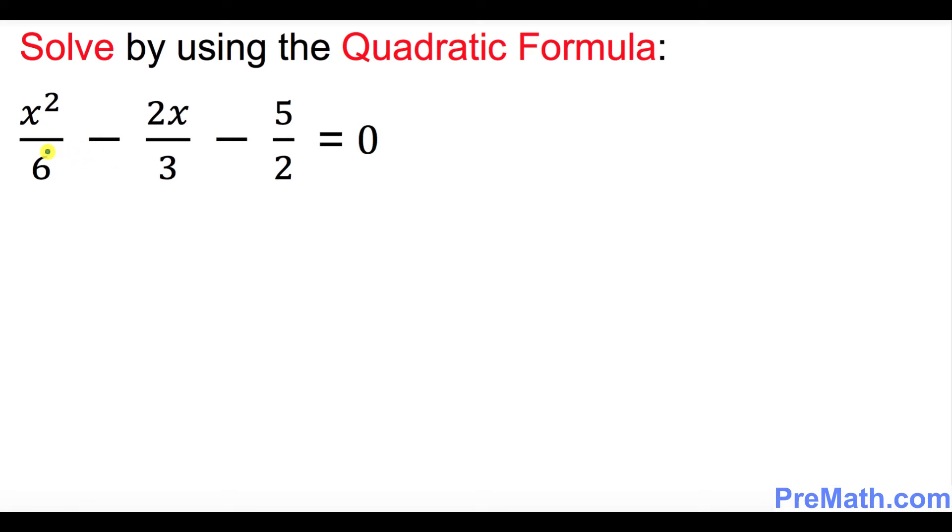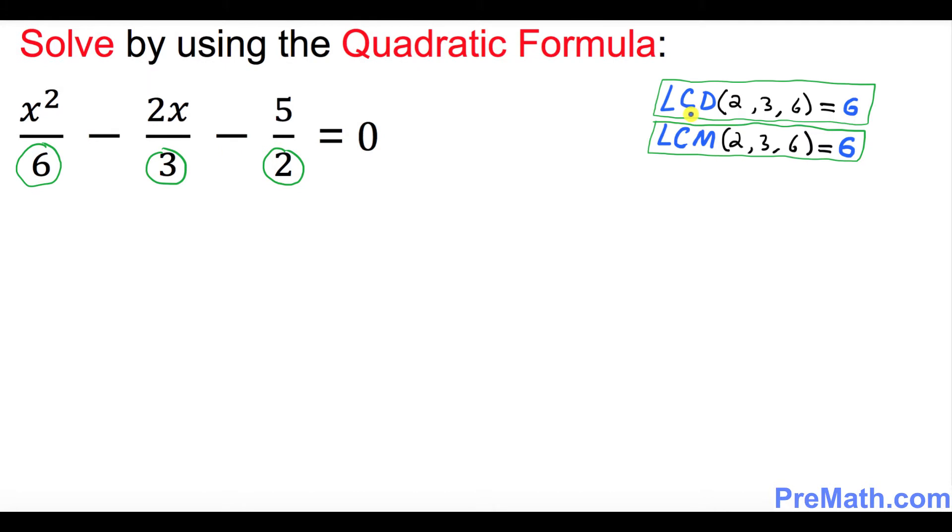Look at the numbers at the denominator, the bottom numbers 6, 3, and 2. Ask yourself what is the least common denominator for these numbers. And obviously our least common denominator is 6.